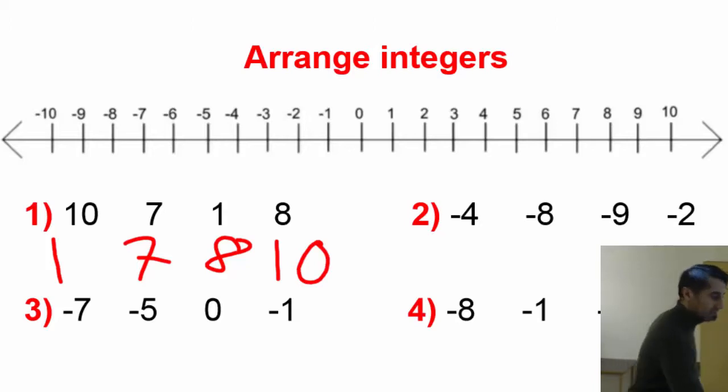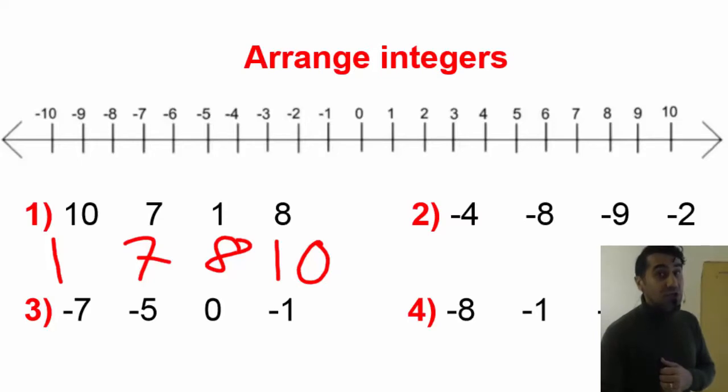Now let's look at the other example here. Over here, all the numbers are negative numbers. But remember that you need to start with the lowest number. And with the negative numbers, the one that's closest to 0 is the greatest in value.